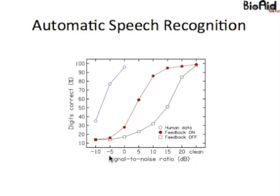At one end, the noise is very loud relative to the speech and drowns out most of it, so the recogniser performs at a very low percent correct. At the other end, we have clean speech with no noise, and the recogniser performs at a very high level. When we use the model with feedback off, it performs very well — up at 100% for clean speech — but as soon as you add any noise at all, it drops down in performance. Even with the speech 15 dB higher than the noise, the performance of the recogniser drops below 50% and carries on all the way down to chance.